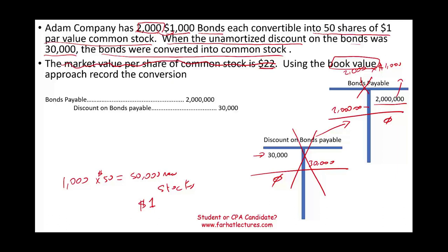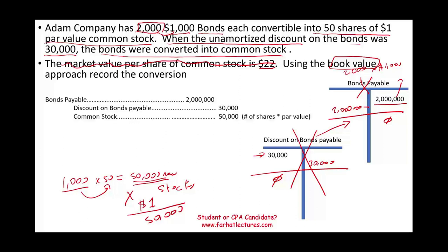Now I need to issue the stocks. Each bond is converted into 50 shares — not $50, but 50 shares — so I am issuing 50,000 shares with a par value of $1 each. Therefore, I credit common stock for $50,000, which is 50,000 shares times the $1 par value. Remember, common stock is credited by the number of shares times the par value.